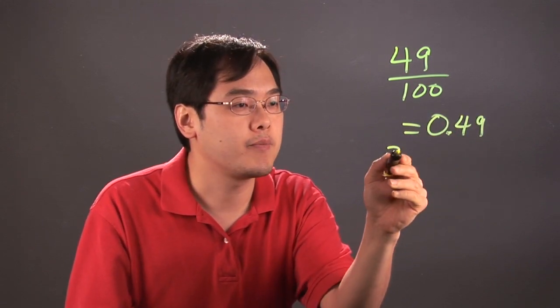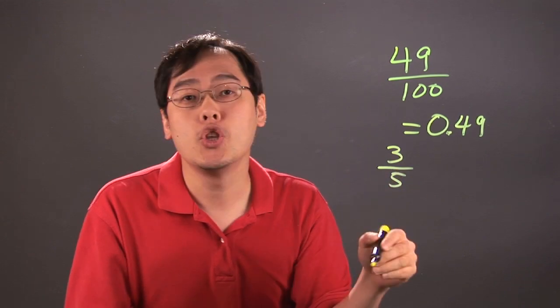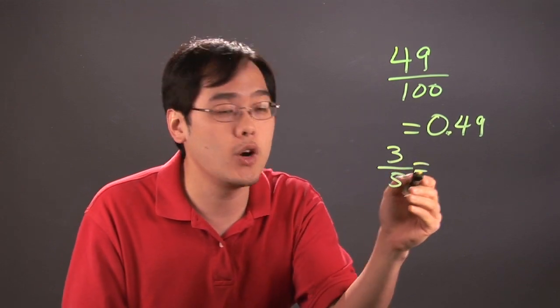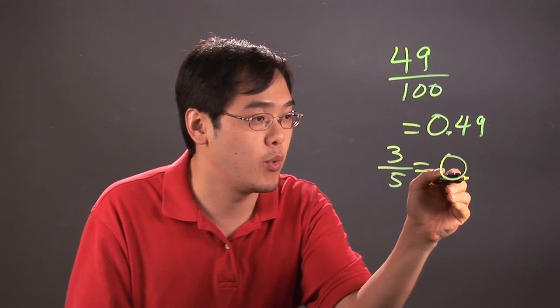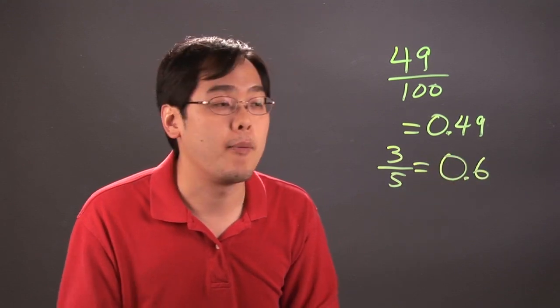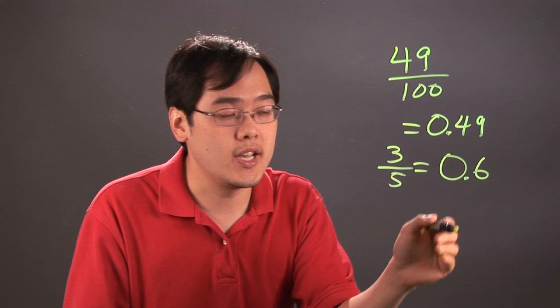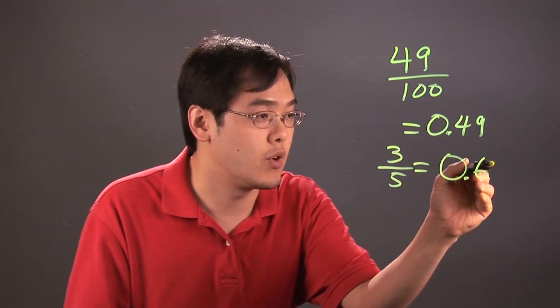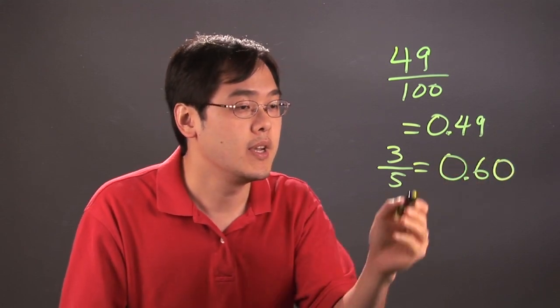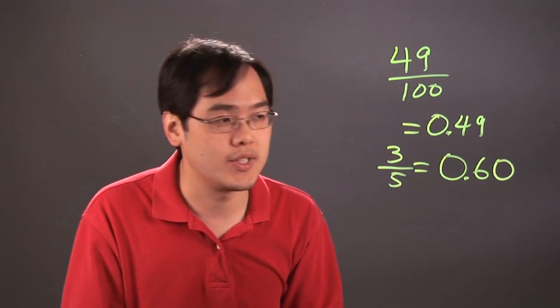Now if you have a fraction like three-fifths, you can convert it to hundredths if you like, or if you know what three-fifths already is, it's going to be 0.6 in decimal form. Now anytime you have a fraction in tenths form, to convert it to hundredths form you just add a zero there. So three-fifths is six-tenths but can be thought of as 60 hundredths.